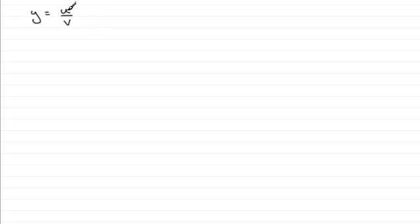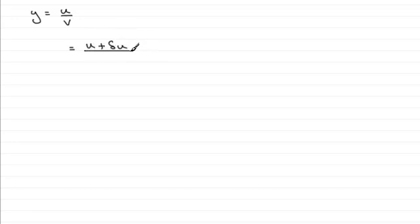We've got y equals u divided by v where u and v are functions of x, and what we're going to do is increase u and v by small amounts. So if we increase u by a small amount — let's say delta u — and also increase v by a small amount, delta v, then the resultant effect will be a small increase in y, which I'll call delta y. So we get y plus delta y.